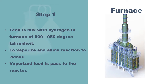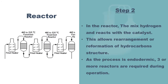Vaporized feed is then passed to the reactor. In the reactor, the mixed hydrogen reacts with the catalyst to allow reformation of hydrocarbon structures to occur. As this process is endothermic, three or more reactors are required. The feed is passed through the furnace for heating before entering the next reactor, to ensure reheating to obtain suitable temperature as heat is absorbed due to the endothermic reaction.